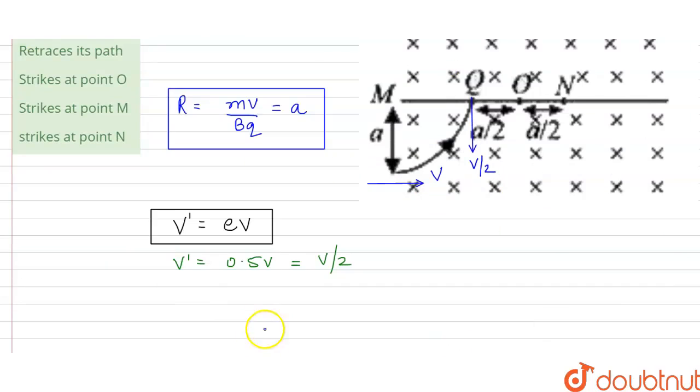Now if we calculate the radius from here then radius is equal to MV' divided by Bq. This is equal to MV by 2 into Bq or this can be written as A by 2.